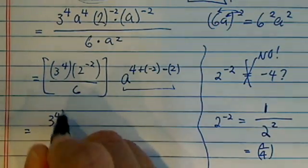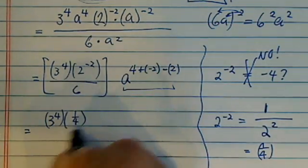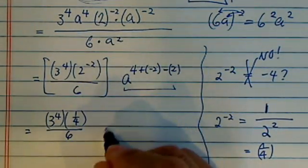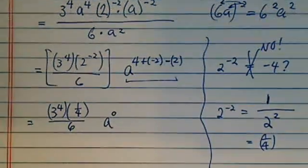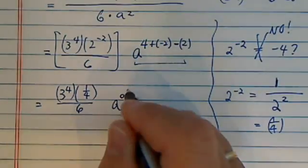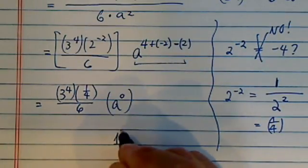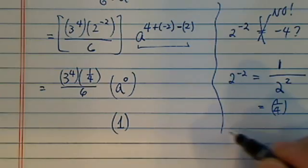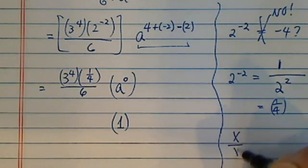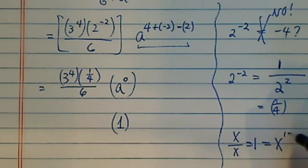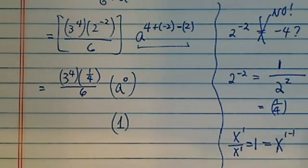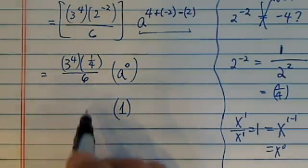So we have a 3 to the 4, 1 over 4, divided by 6, and the a, here we have 4 minus 2 minus 2, I have a to the 0. Anything to the 0 is actually a 1. A lot of students say, well, why is that? It's not strange, so if you have x over x, you know this equal to 1, and it also equal to x to the 1 minus 1 because we're dividing here. So 1 is equal to x to the 0, so anything to the 0's power is equal to 1.